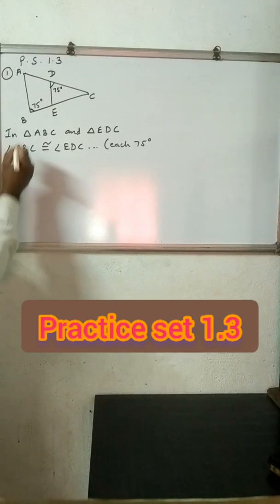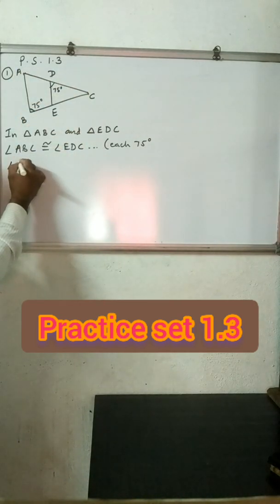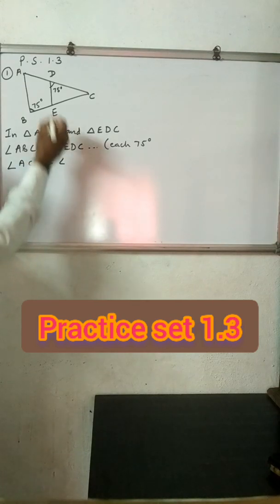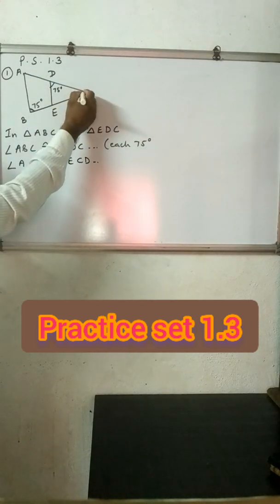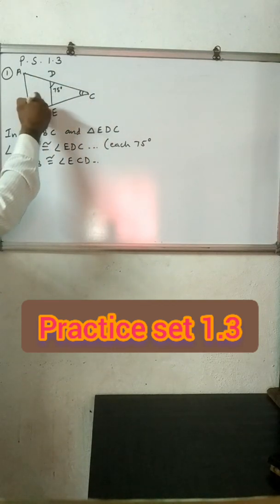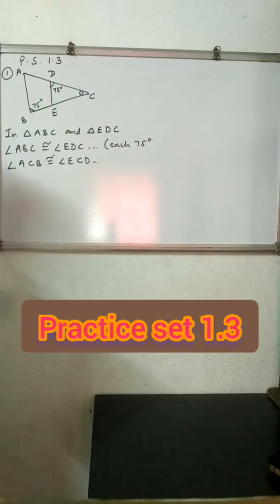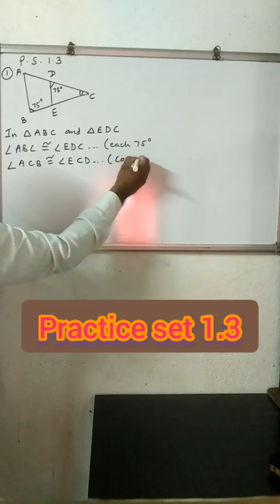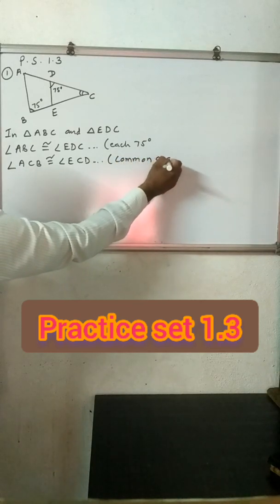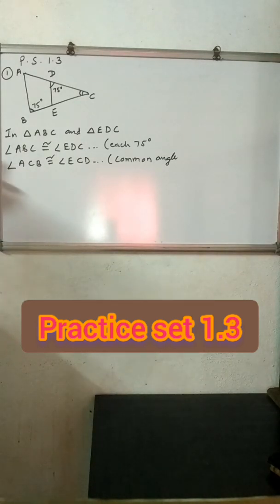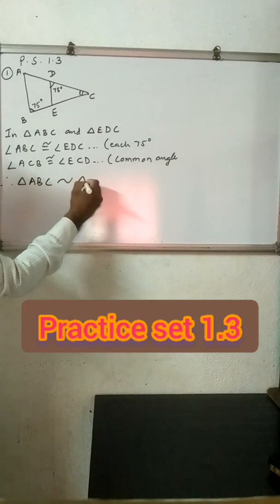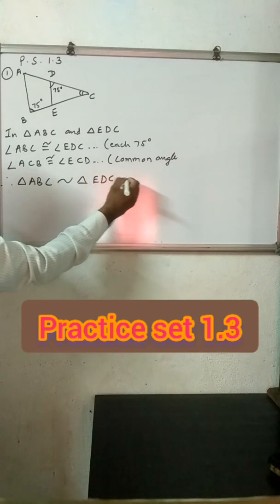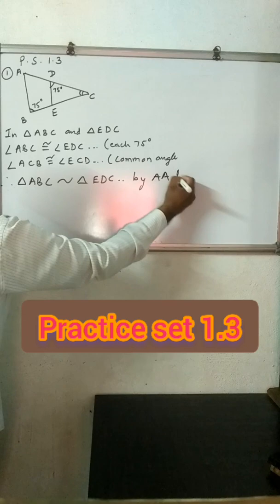Angle C is common to both triangle ABC and triangle EDC, so it is a common angle. Since two angles of one triangle are congruent to corresponding two angles of the other triangle, triangle ABC is similar to triangle EDC by the Angle-Angle test of similarity.